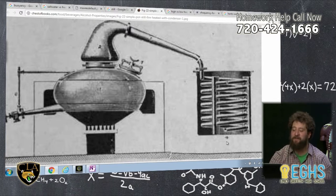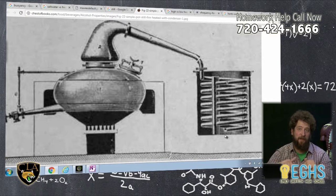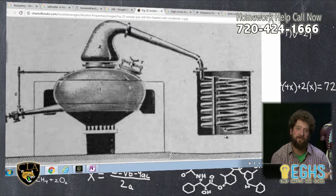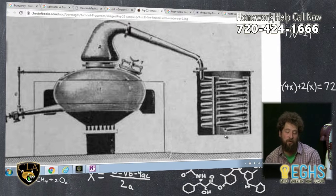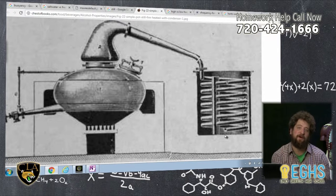And then you would get down at the bottom of this thing. You would have a liquid dripping out, which would have a higher percentage of alcohol in it, or whatever your more volatile part of that liquid was.